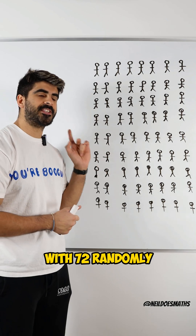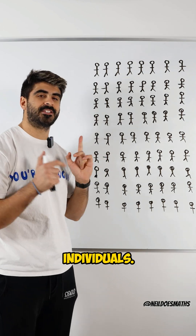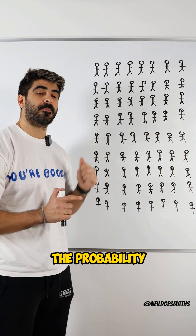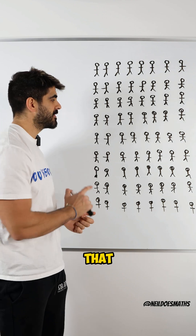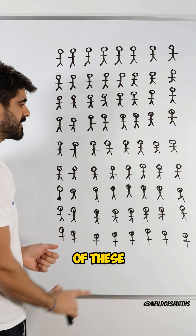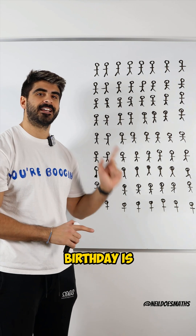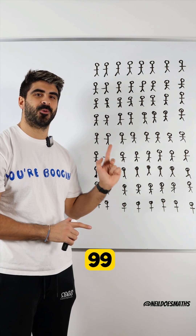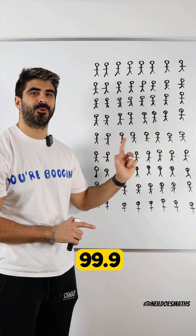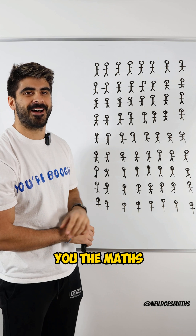Imagine a room with 72 randomly chosen individuals. The probability that at least two of these individuals have the same birthday is 99.9%. Let me show you the maths behind it.